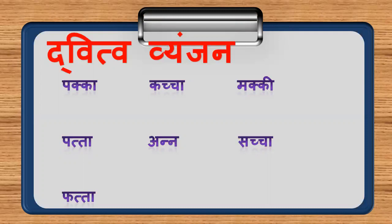K plus K plus K is the same as K. And K is the same as K and K. That means we start to make the words of this type. Ch plus Ch, then it is SACCHA. T plus T, then it is FATTA. This type we can make words of this type. Thank you.